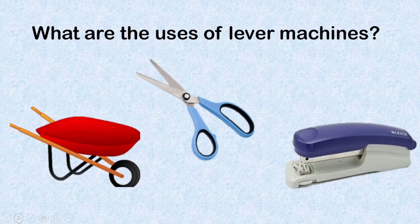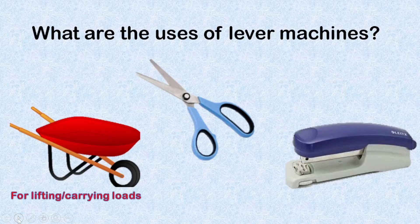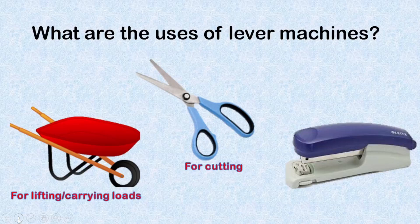Now let's discuss the uses of lever machines. What are the uses of lever machines? First, we use lever machines for lifting or carrying loads, like the wheelbarrow. Second, we use it for cutting — an example of this is the scissors. And third, we use lever machines for binding, like the stapler.